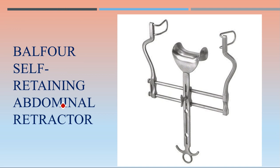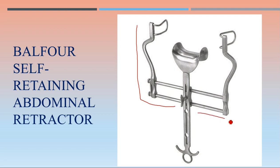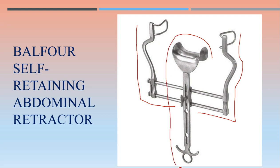This is the Balfour self-retaining abdominal retractor. Once applied, it self-retracts — it keeps things retracted without requiring continuous applied force, which is why it is called a self-retaining retractor. It has a body and a blade part. The blade is a separate part of the Balfour self-retaining abdominal retractor.